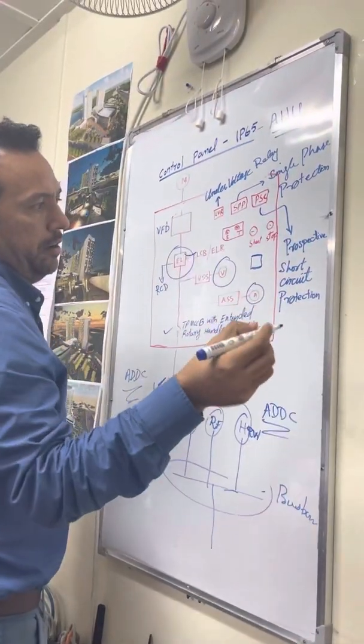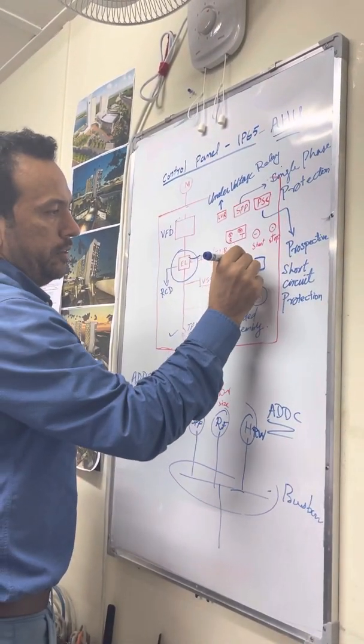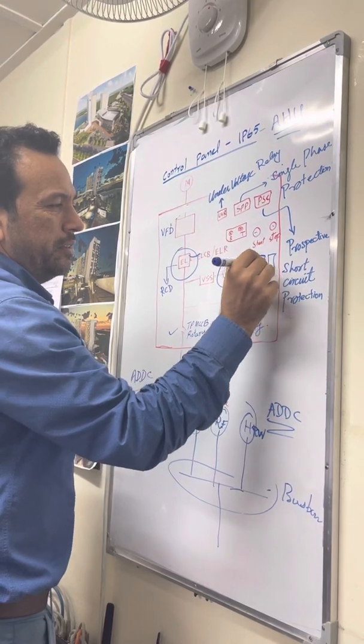In between we have, for example, Transformers are there, Motorized Dampers voltage are there, different timers are there, isolators are there.